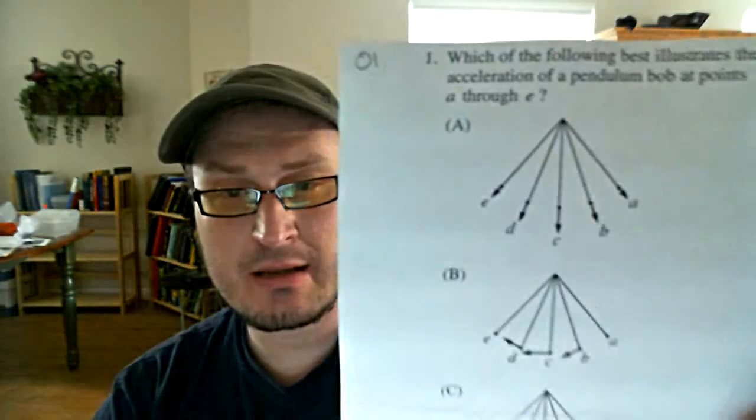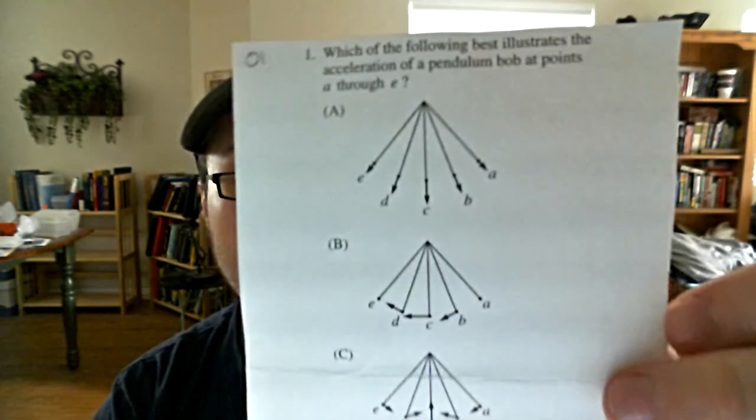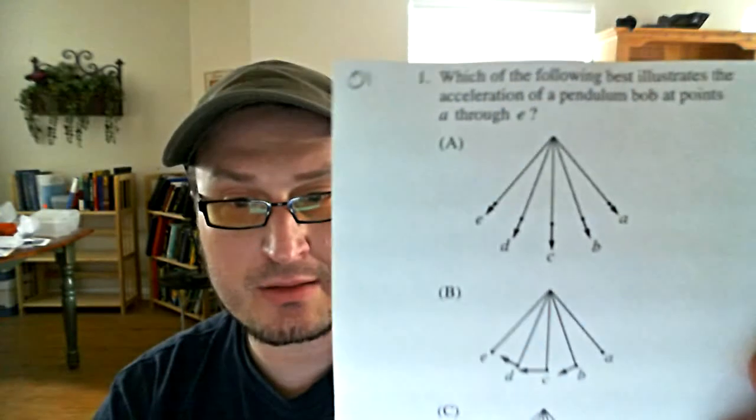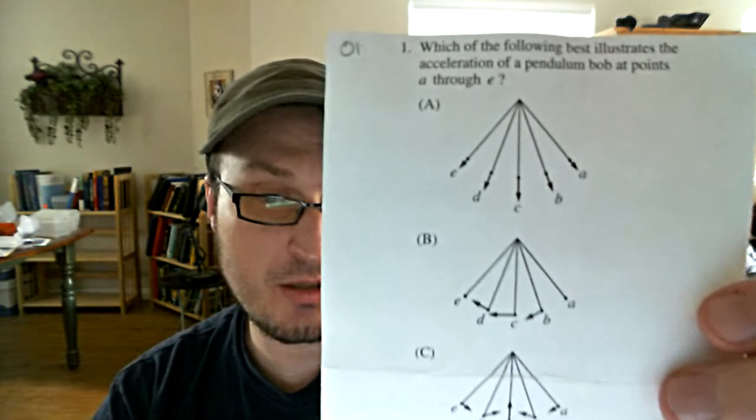Answers A and E are also interesting — both could represent the tension in the wire. You might say that can't be tension because ropes on pendulums don't push, but if you multiply those vectors by a scalar of negative one, going in the other direction, you could represent them that way. It would be a strange way to draw them, but technically those could both represent the tension in the pendulum — which is definitely not what we're looking for.